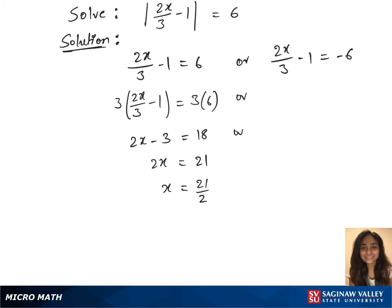We will solve the second equation now by clearing out the fractions again. In our next step we use the distributive rule which gives us 2x minus 3 equals minus 18.